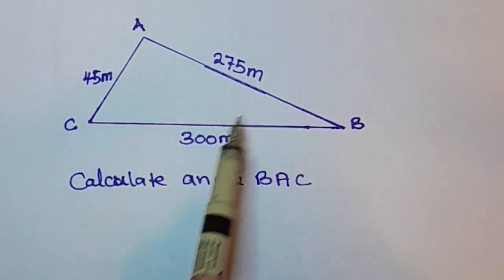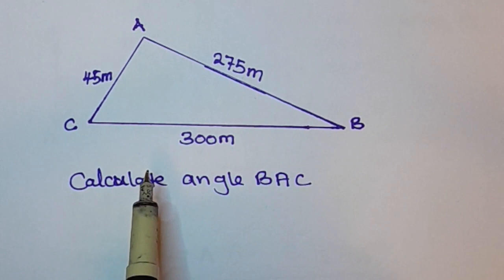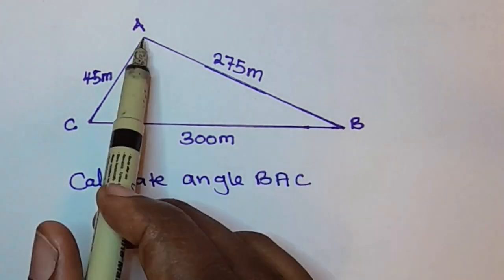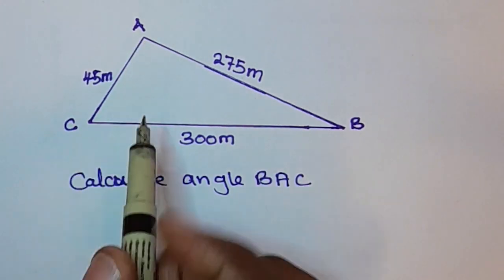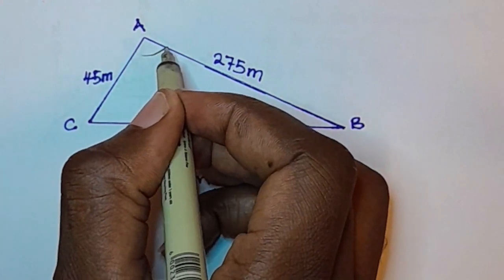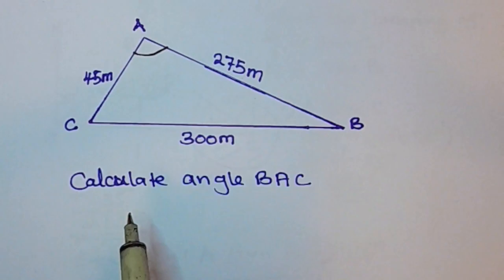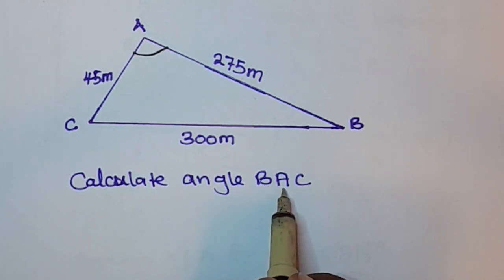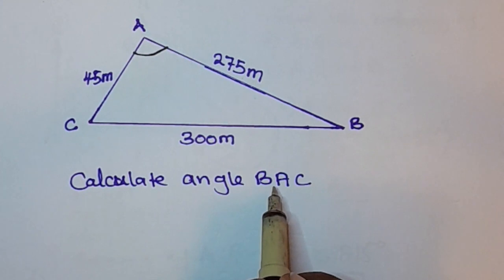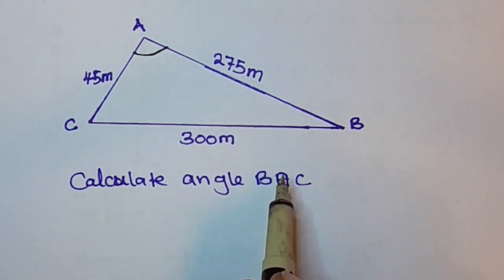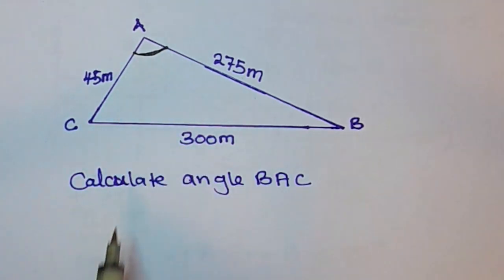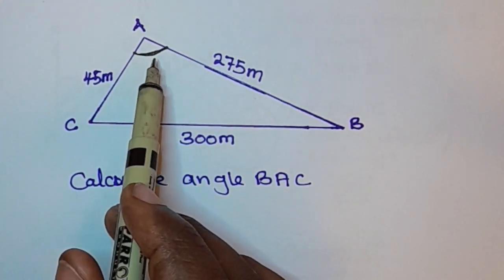Here is an example question: calculate angle BAC. The angle they want you to calculate is this one here. When you have three letters like this, the middle letter indicates the vertex at which the angle is lying — so that is why this is the angle we are looking for.